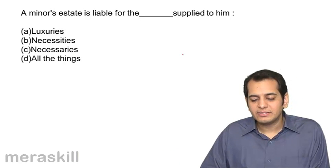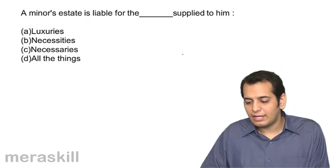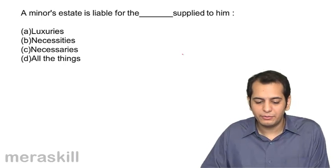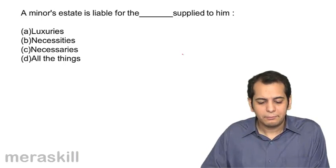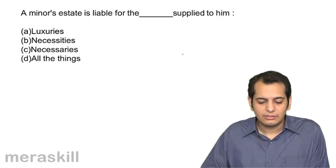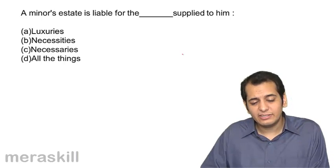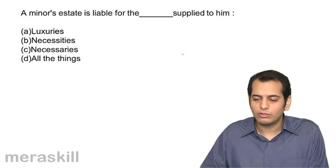A minor's estate is liable for the following supplied to him. A. Luxuries. B. Necessities. C. Necessaries. D. All the things.